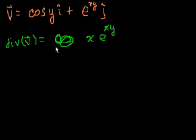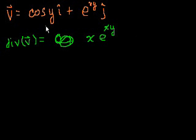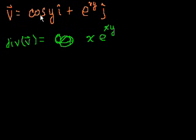One thing to immediately realize, even before we work on the intuition, is that when we did gradient, we gave a scalar field and got a vector field. When you take the divergence of something, you're going in the opposite direction in some ways. You start with a vector field — something that gives you a vector at any point x, y. But when you take the divergence of it, you get a scalar value for any point x, y. So the divergence tells you an actual scalar number at any point in the field.